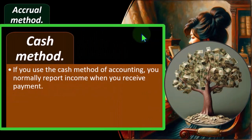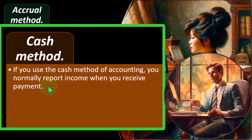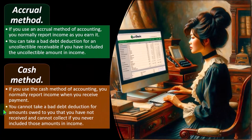But if you're using the cash method, you normally report income when you receive payment, which would be an unusual method if you're in a business where you invoice clients and track accounts receivable. Some software like QuickBooks lets you toggle the accounting method between accrual and cash, so you might be recording revenue only when you actually collect the cash. But if that were the case, you would have to use the cash method consistently, meaning you never recorded the revenue when you invoiced the client. Which means if they never pay you, you don't get a deduction because you never recorded the income in the first place. You cannot take a bad debt deduction for amounts owed that you cannot collect if you never included those amounts in income.